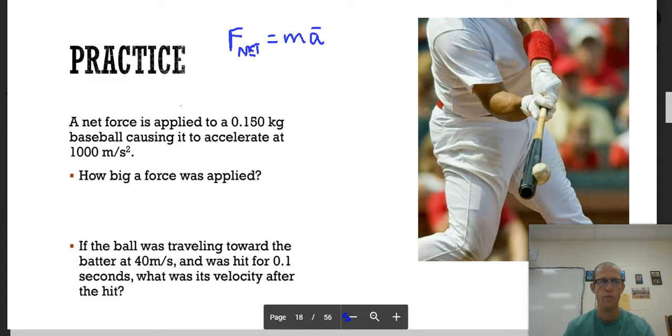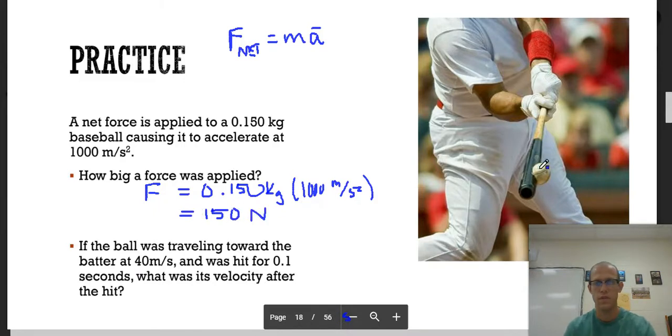Another practice problem. A net force is applied to a 0.150 kilogram baseball, causing it to accelerate at 1000 meters per second squared. How big a force was applied? So force is calculated by mass, 0.150, times 1000. When we multiply that together, we are going to get out an answer of 150. So the force that the bat is applying to the ball is 150 newtons.